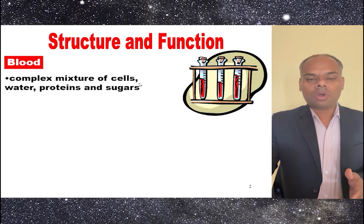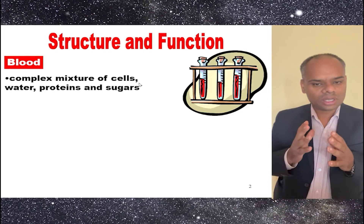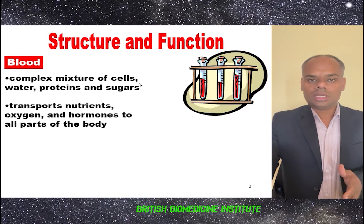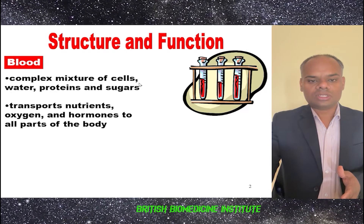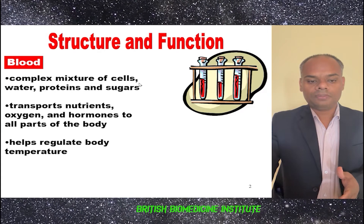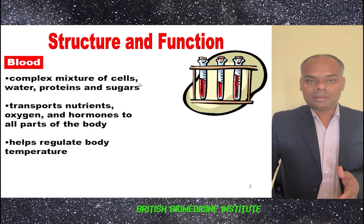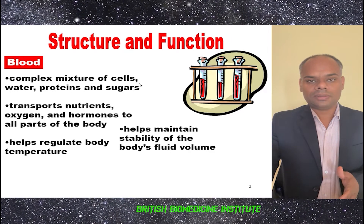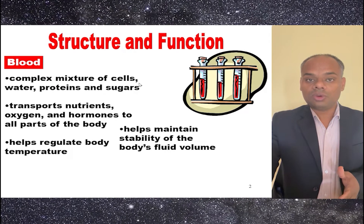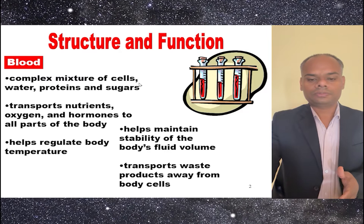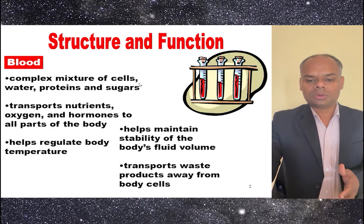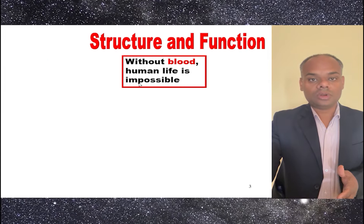Blood is a complex mixture of cells, water, protein, and sugar. It helps in transport of nutrients, oxygen, and hormones to the whole body. It helps regulate body temperature and helps in maintaining the stability of body fluid volume. It also helps in transport of waste products away from the body cells.